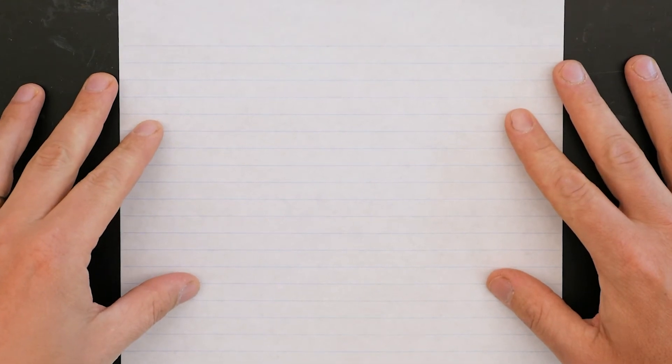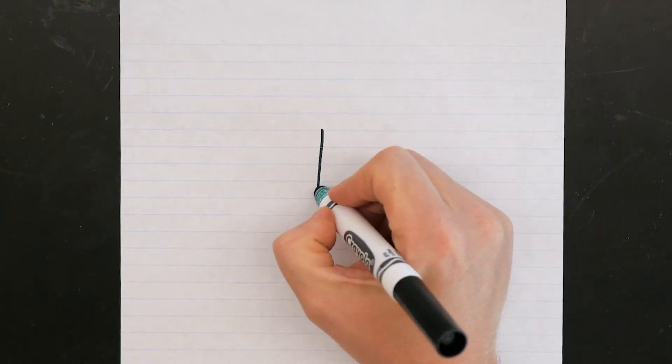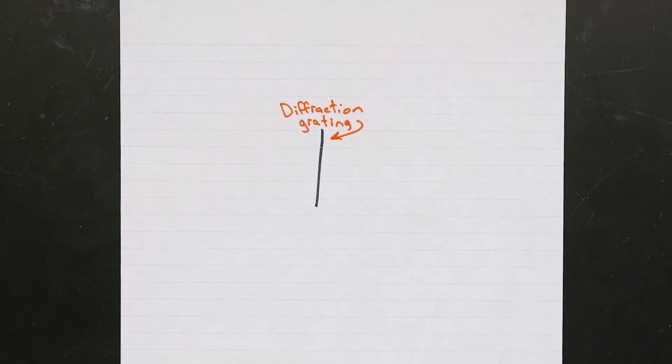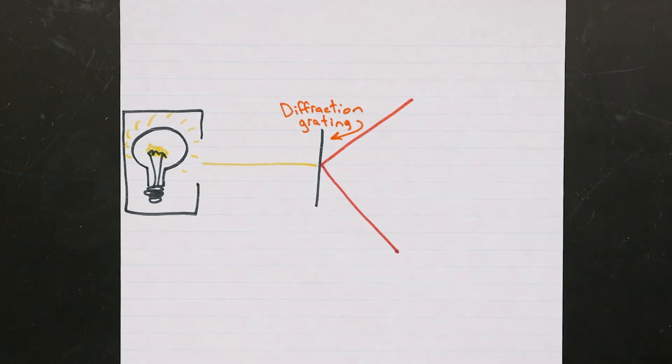To do this, we'll look for the unique set of photons that each sample emits using a diffraction grating. A diffraction grating bends a light beam, much like a prism, but by different amounts for different colors.